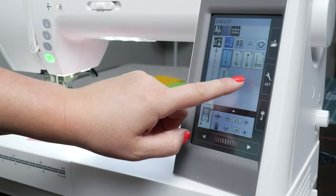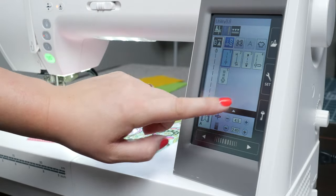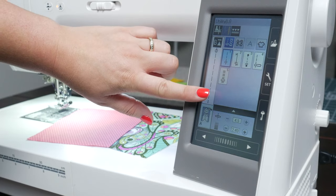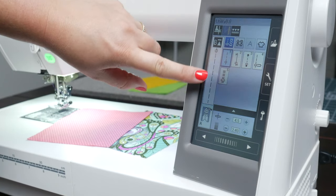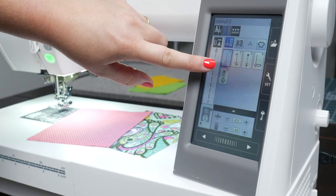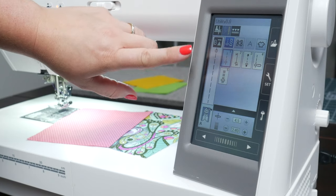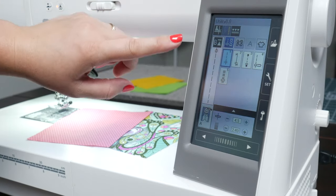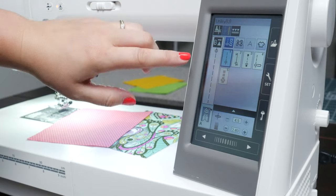Also some will either gray it out or like this one, they won't even be available. It's only letting me select stitches that I can use with this particular plate. This is a really nice feature and will help you keep from breaking needles.